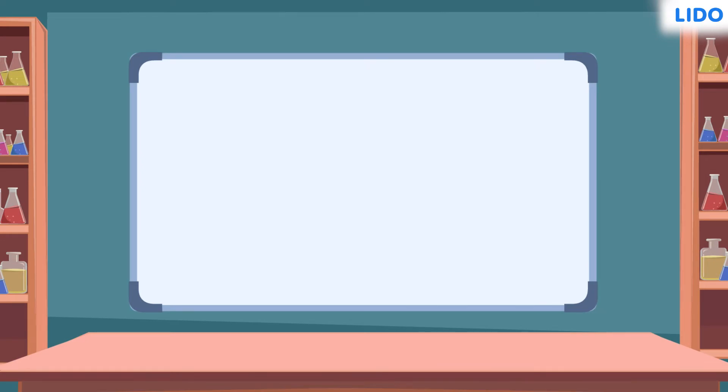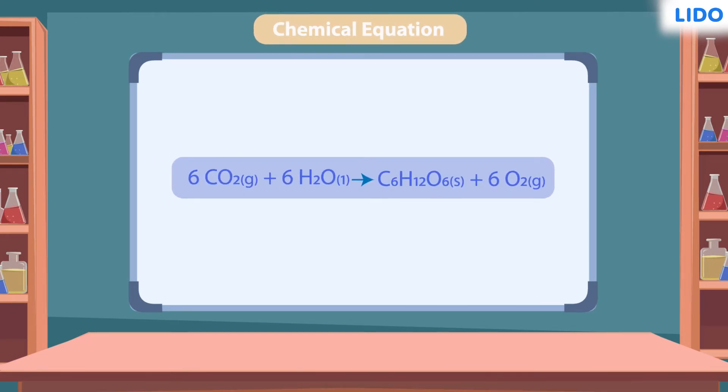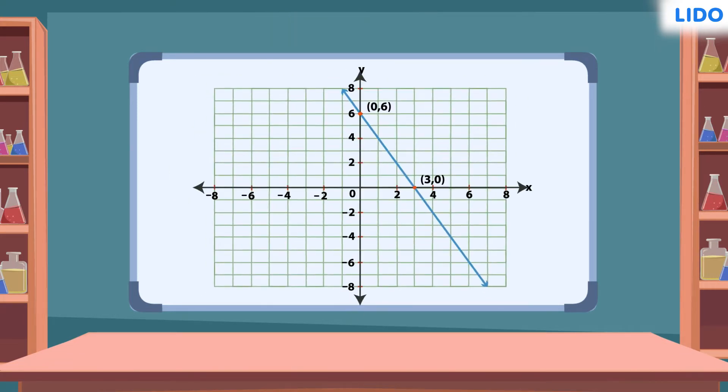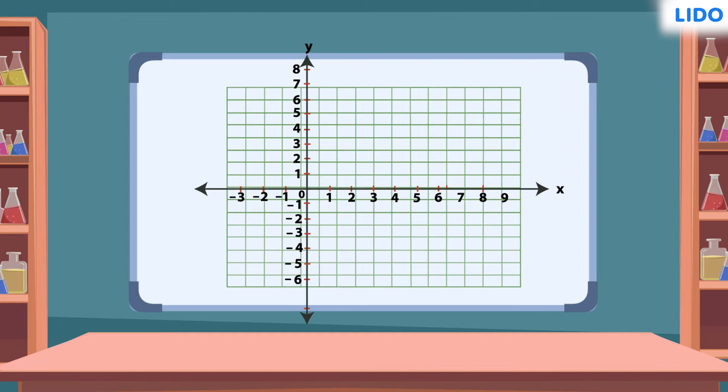This is a unique chemical equation representing the reaction written on the board. Even in coordinate geometry, there are unique equations for any straight line. Let's learn more about it.